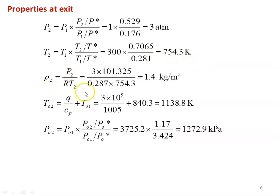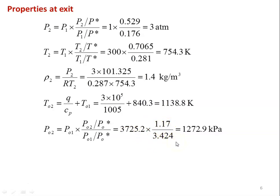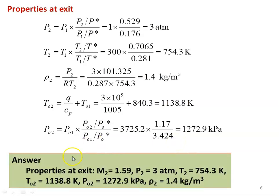Density rho2 = P2 / (R × T2) = 3 × 101.325 / (0.287 × 754.3) = 1.4 kg/m³. Stagnation temperature T02 = Q/Cp + T01 = 3×10⁵/1005 + 840.3 = 1138.8 Kelvin. Stagnation pressure P02 = P01 × (P02/P0*) / (P01/P0*) = 3725.2 × 1.17 / 3.424 = 1272.9 kPa. Properties at the exit: M2=1.59, P2=3 atm, T2=754.3 K, T02=1138.8 K, P02=1272.9 kPa, rho2=1.4 kg/m³.